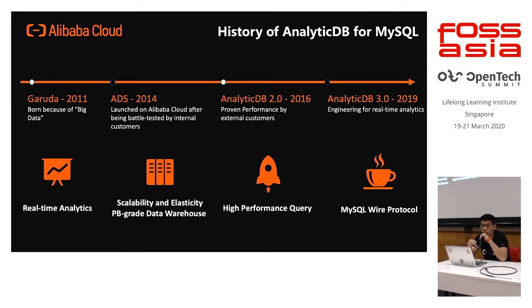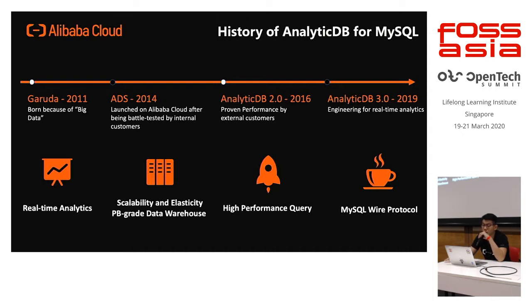AnalyticDB for MySQL has a quite long history. It started back in 2011 — it was called Garuda. Then we realized it wasn't good enough, so we released a new version in 2014 called ADS on Alibaba Cloud. After that we released a 2016 version, and today it's AnalyticDB 3.0. It's 100% compatible with SQL 2003 standards. We use it during Double 11 to support real-time analytics for internal business units.